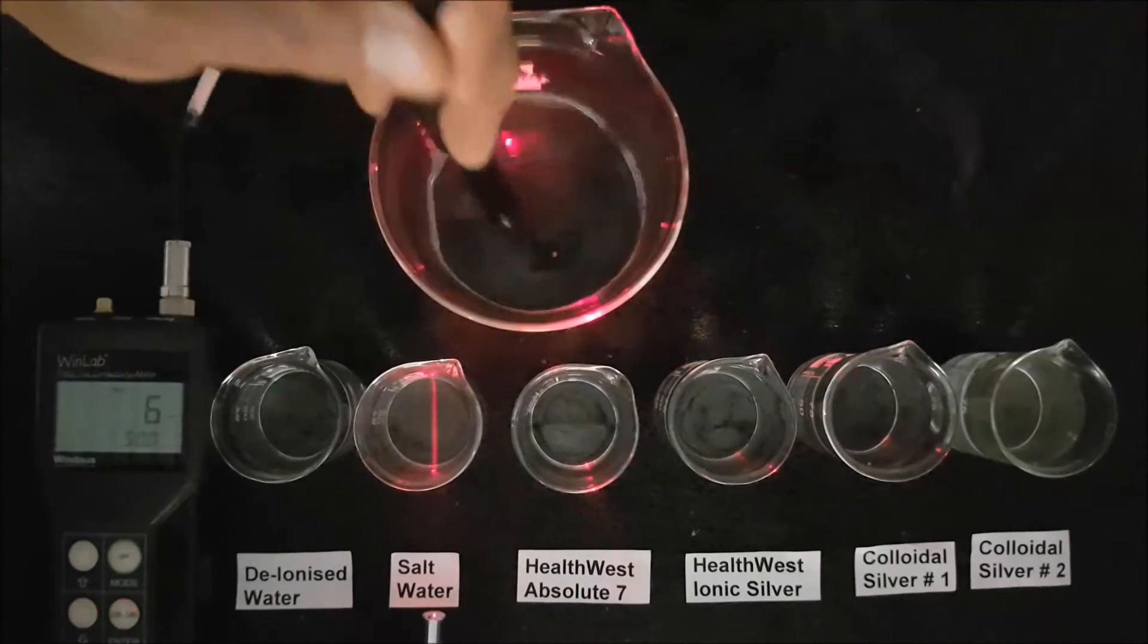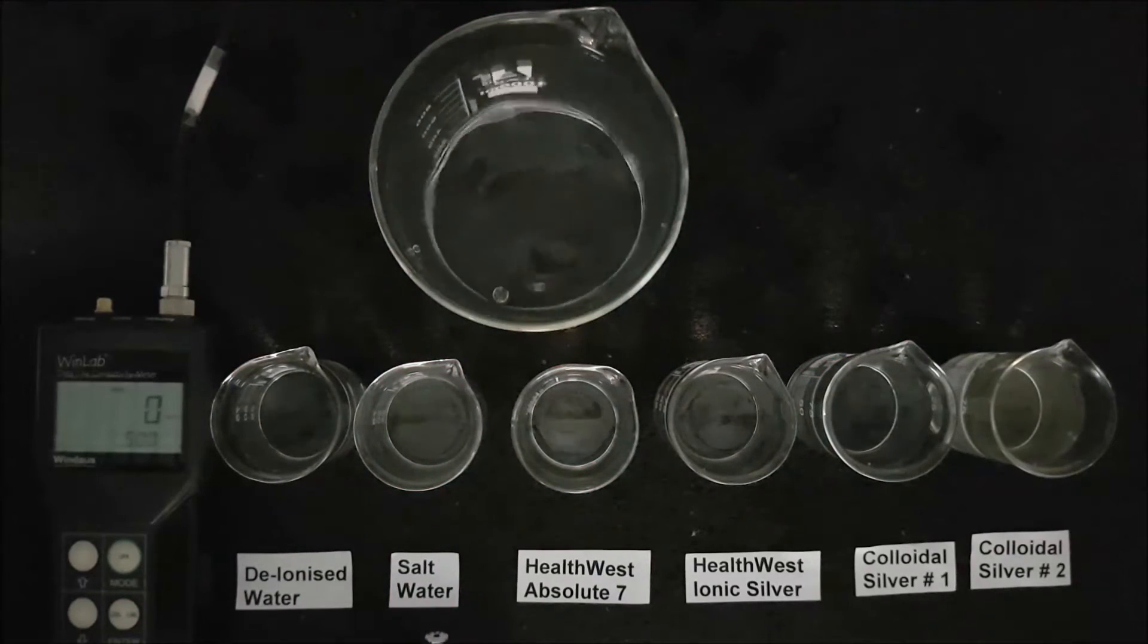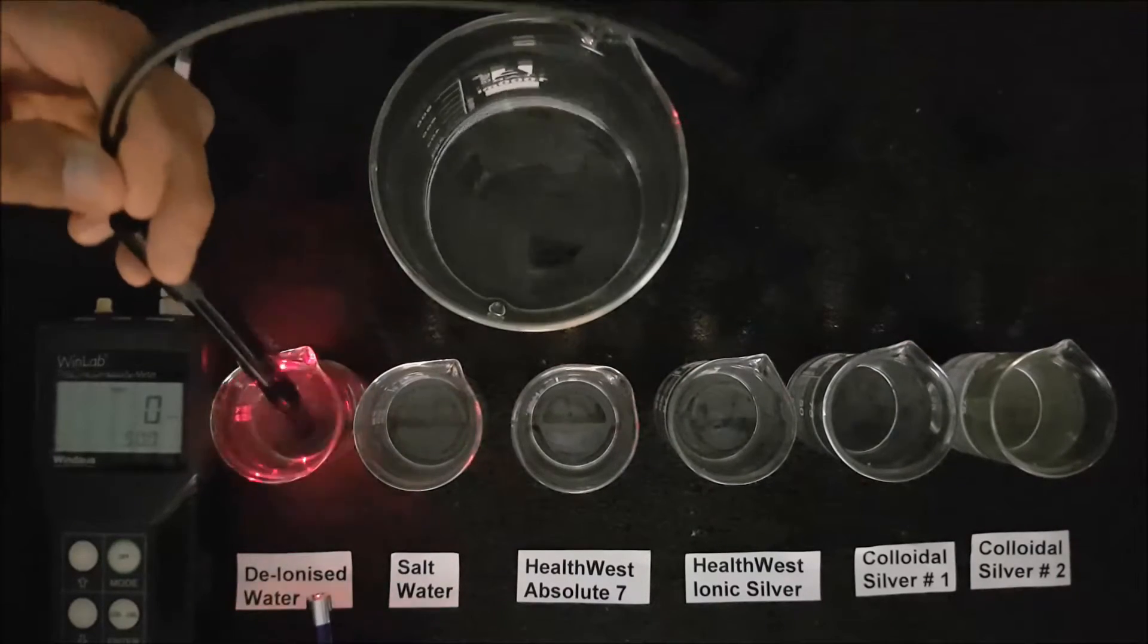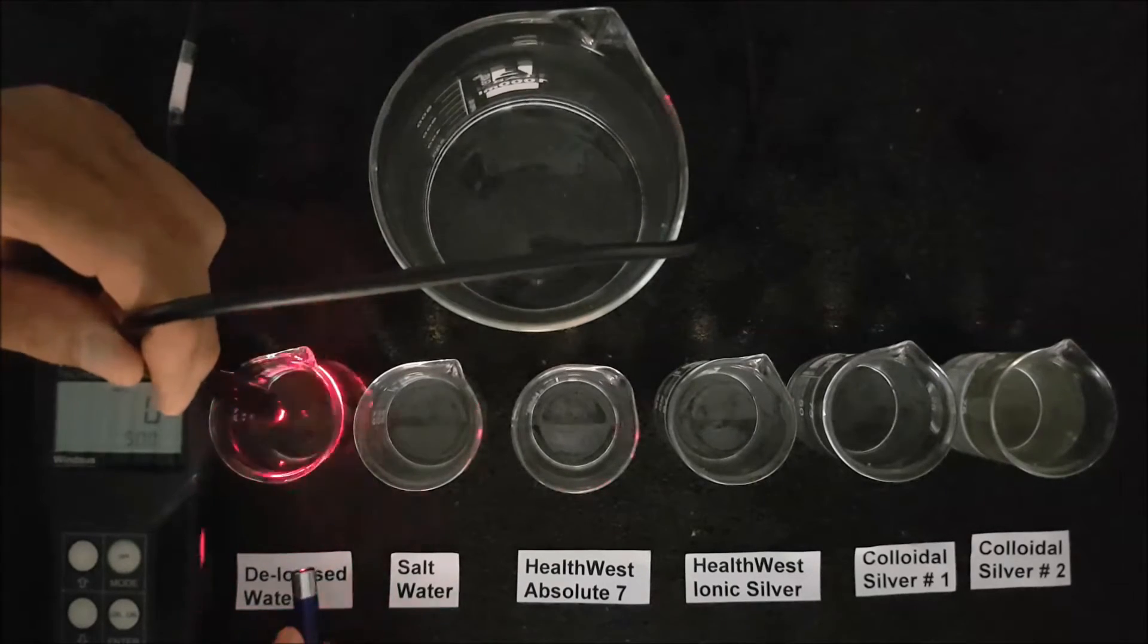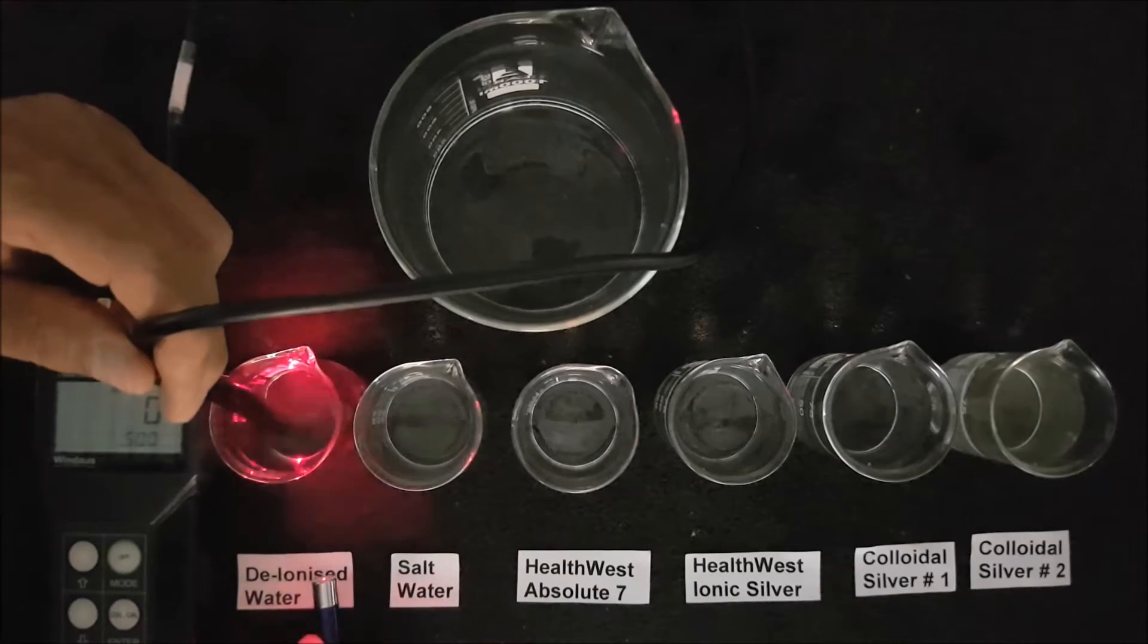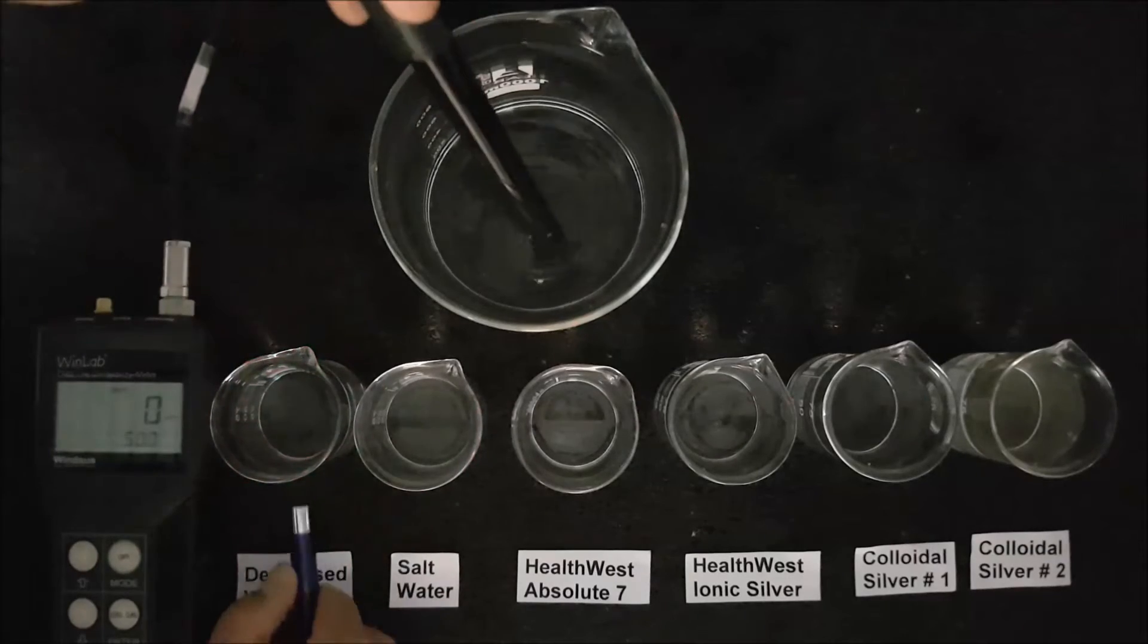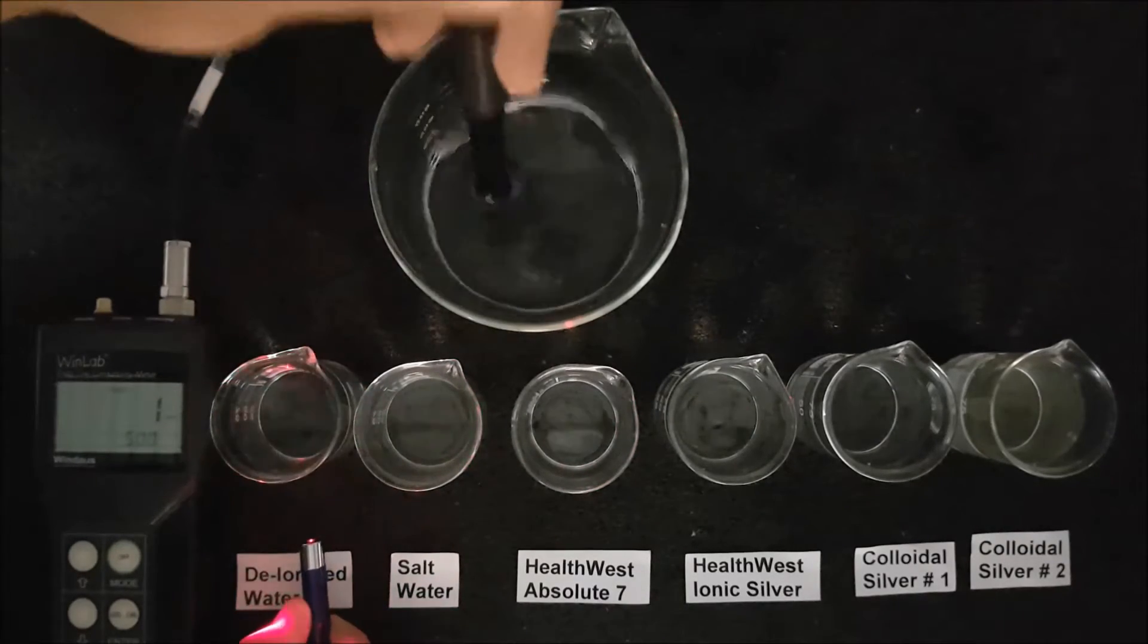You can clearly see the beam as it highlights all the particulate matter in the beaker. This is now contrasted with the deionised water in the first beaker, which contains water that has had all the minerals removed and is pure, as can be seen by the conductivity meter, which shows a parts per million reading of zero. As you can see, this does not exhibit any Tyndall effect at all, because there are no particles or colloids or metals or impurities because it is pure de-mineralised water.